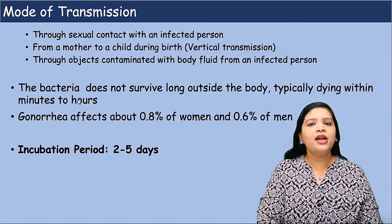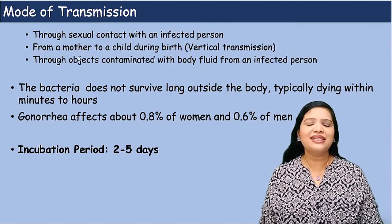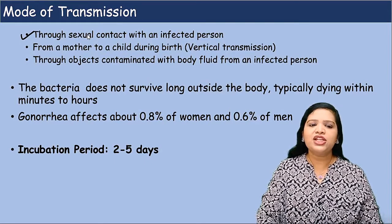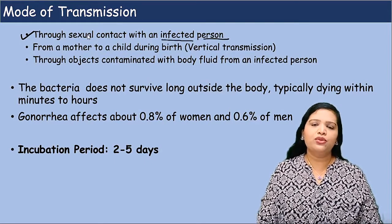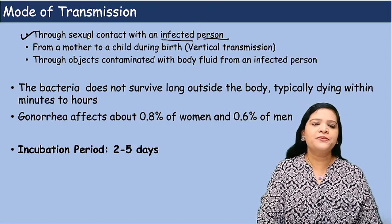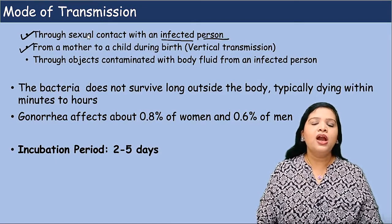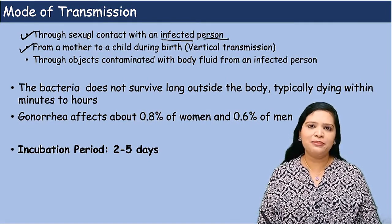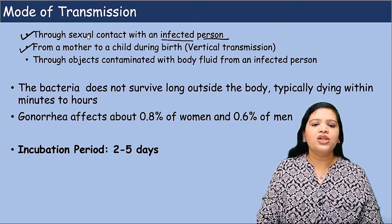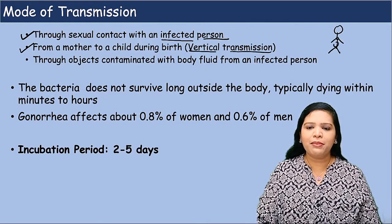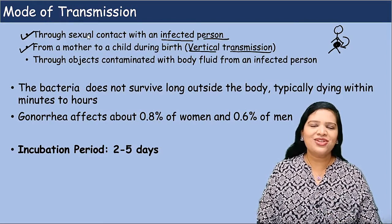Let us see the modes of transmission for this infection. We know this is a sexually transmitted disease, so the major route of transmission is through sexual intercourse — sexual contact with an infected person, male or female. If they are infected, they can pass the infection to their partners. The second mode of infection is from mother to fetus — if the mother has this infection, it could affect the baby in the uterus. This is called vertical transmission.